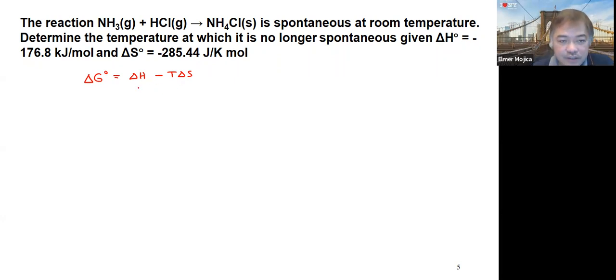Remember, when you have a negative delta H and a negative delta S, most likely there will be two conditions of your delta G. At low temperature, this is negative and spontaneous. But at high temperature, this will become positive, just like the case that we have here.